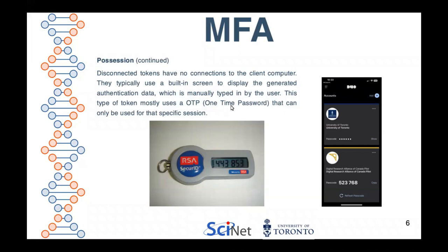These two photographs show two types of disconnected tokens. One is the SecureID, which was very common a few years ago — it generates a number every 60 seconds whether you use the number or not. The photo on the right is a screenshot of a cell phone using Duo, which is generating a passcode. This passcode is a one-time password.